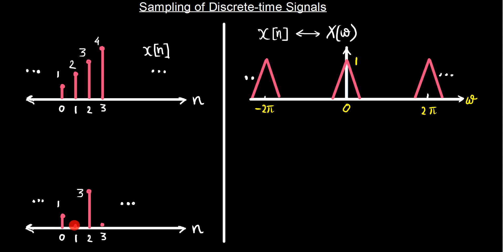So we retain the sample at location 0, remove the sample at location 1, retain at location 2, remove the next, and so on — retaining alternate samples while the remaining alternate samples are simply made zero. This process is called sampling, and here the sampling is with a factor of 2, because every alternate sample is removed or made zero.